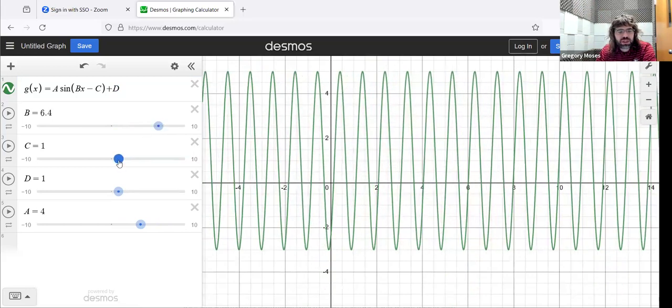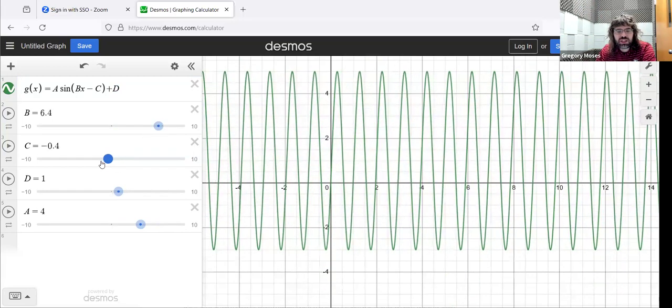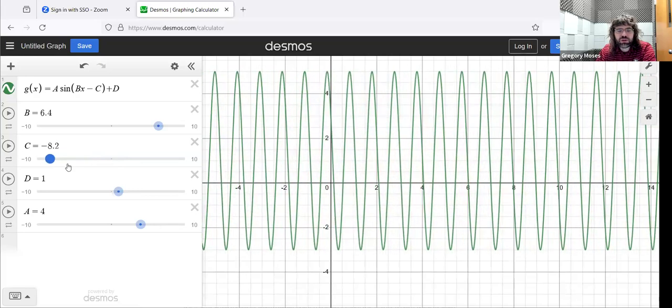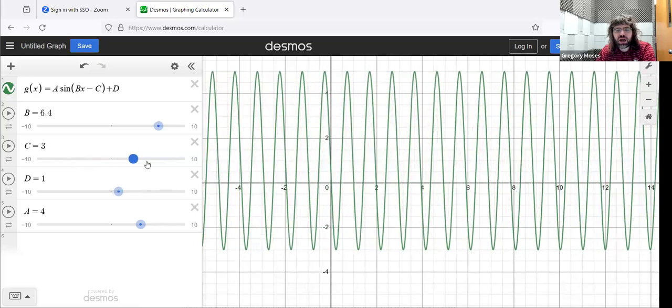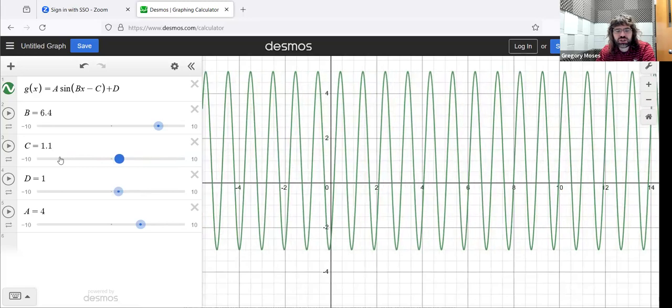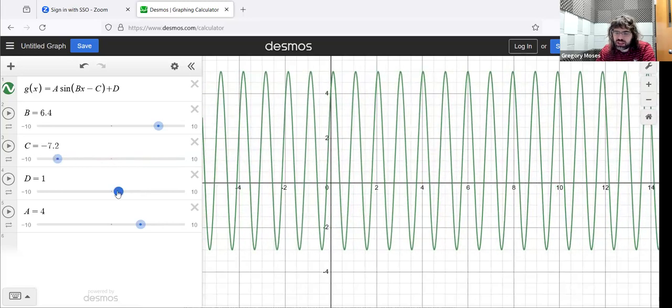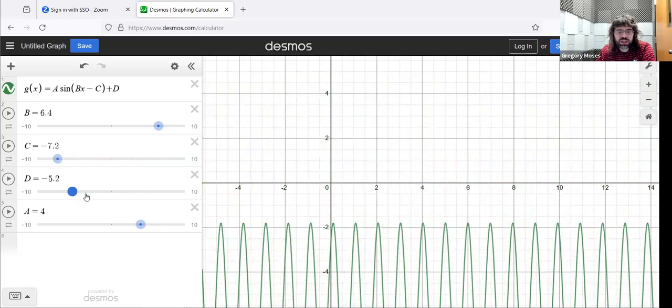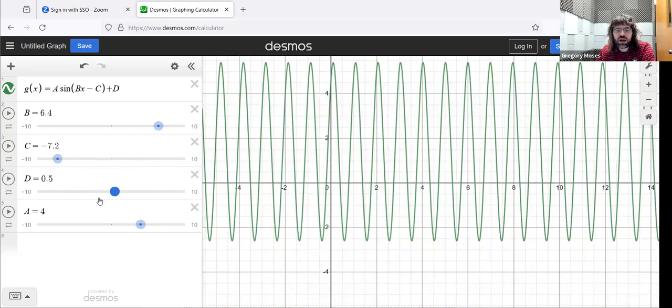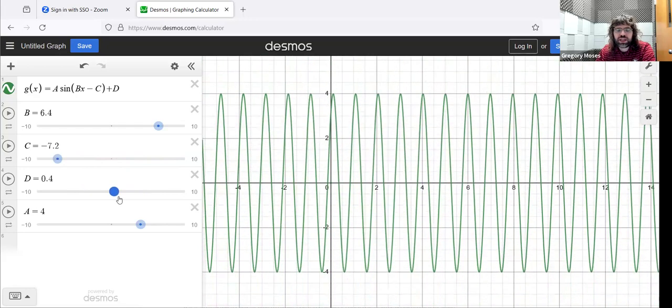If I mess around with C, I change where these waves are on the Cartesian plane. The same thing with D, I change where the waves are on the plane.